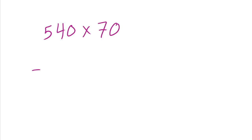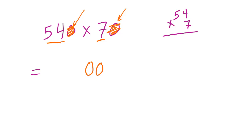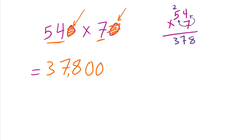Let's try a harder example: 540 × 70. We have two zeros in the factors, so we write them in the product. Now the question is 54 × 7. Using place value: 7 × 4 = 28, write down 8 and carry 2. Then 7 × 5 = 35, plus 2 = 37. So 54 × 7 = 378, making the final answer 37,800. Hope you understand — have a nice day and goodbye!